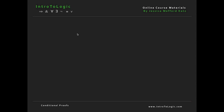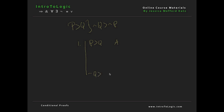Consider the argument: if p then q, therefore not q then not p. Like any argument, we draw a scope line and write our assumptions, which in this case is just if p then q, and we write the conclusion we're trying to derive at the bottom, which is if not q then not p.